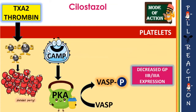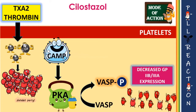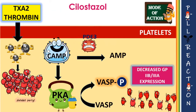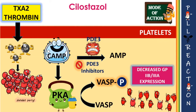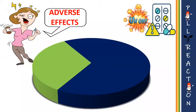This inactivation results in decreased glycoprotein 2b3a receptor expression, thereby decreasing platelet aggregation. So increased cyclic AMP causes decreased platelet aggregation. However, cyclic AMP can again be metabolized to AMP by phosphodiesterase 3 enzymes. Cilostazol blocks this enzyme, and in this way cilostazol inhibits platelet aggregation and acts as an antiplatelet agent.